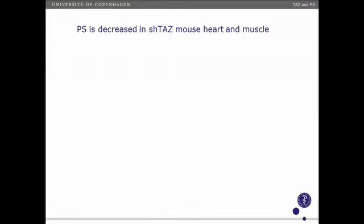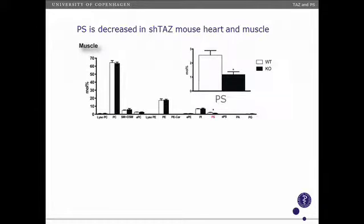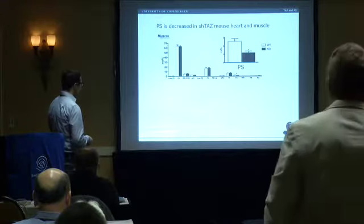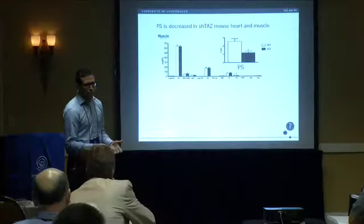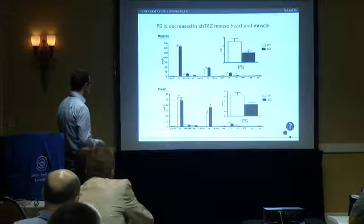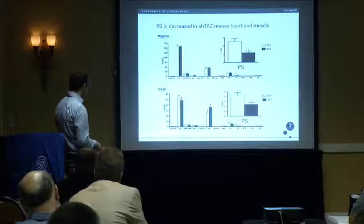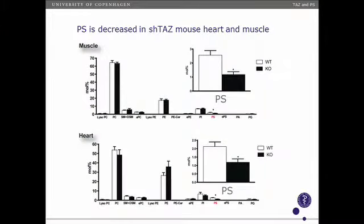So what did we find in the glycerophospholipidomics? The really striking thing was what didn't change. There's no change in lyso-PC, PC, sphingomyelin, PE, or PI. But in muscle we saw about a 50% decrease in phosphatidylserine, which we thought was interesting. We did the same analysis in heart — we see some changes in absolute mole percentages, like less PC and more PE — but we again saw the same ~50% decrease in phosphatidylserine. So now we were legitimately intrigued.